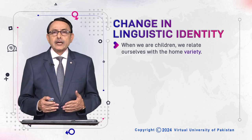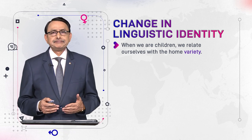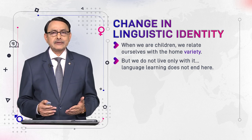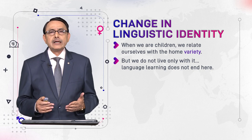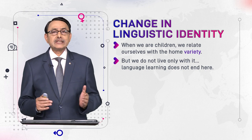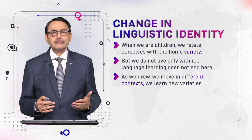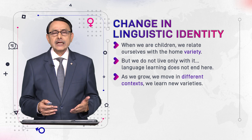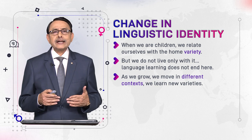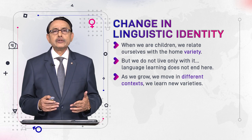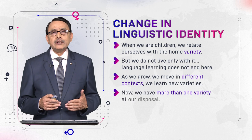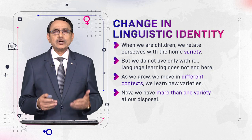We know that we learn our language or its sub-variety at home, but we don't live only by this single variety throughout our life. The human mind is built in such a way that it can store more than one language system simultaneously, so we are able to learn as many languages as we like, and the same is the case with variety. When we move outside home, we move to new contexts, interact with other people and situations, and are exposed to new varieties of the same language or varieties of other languages. In this way, we acquire more than one variety.